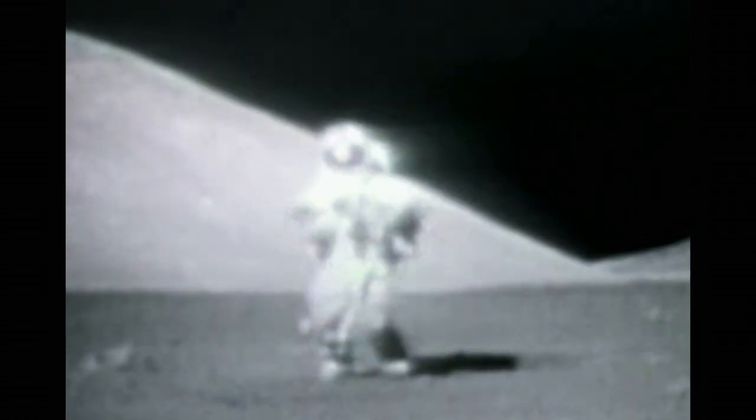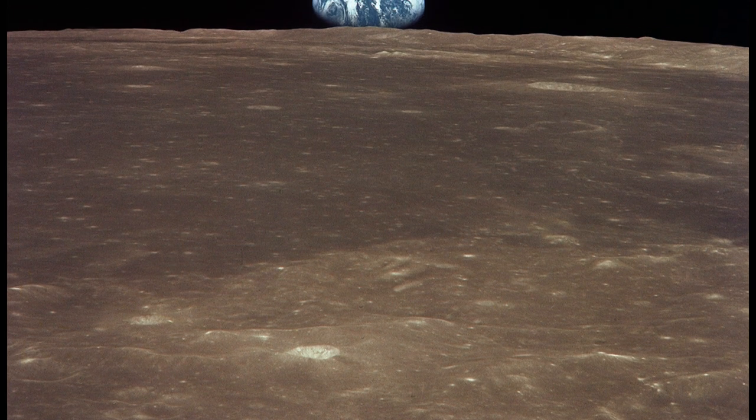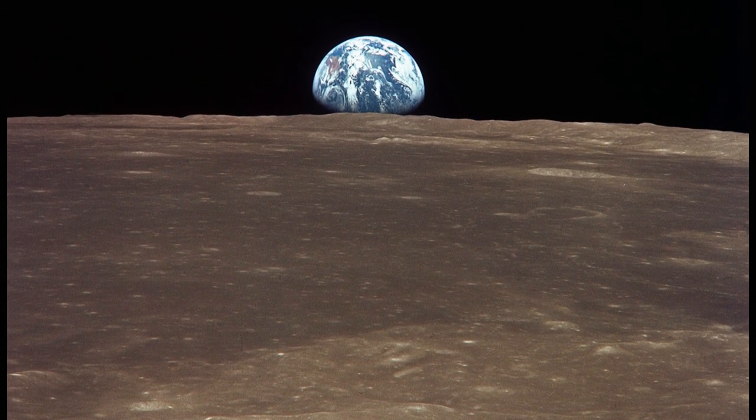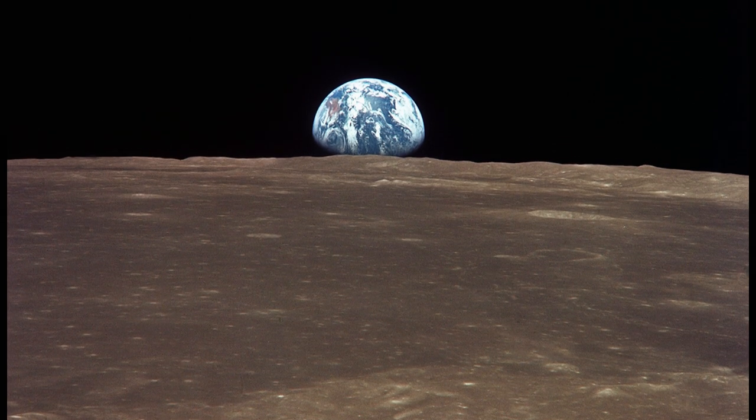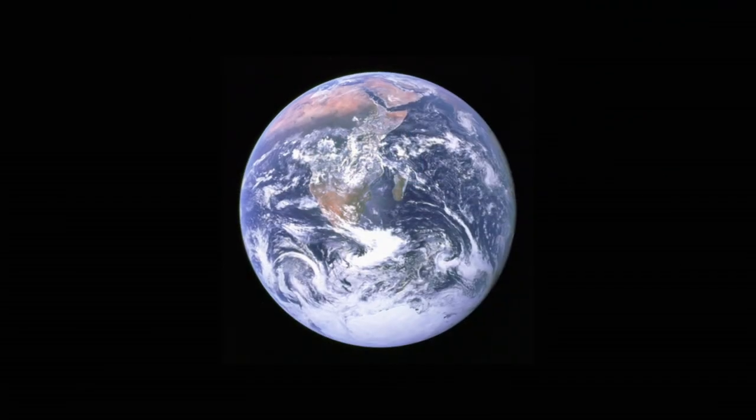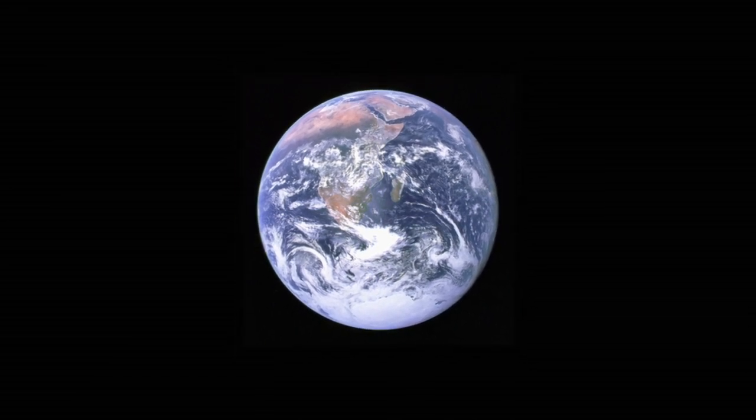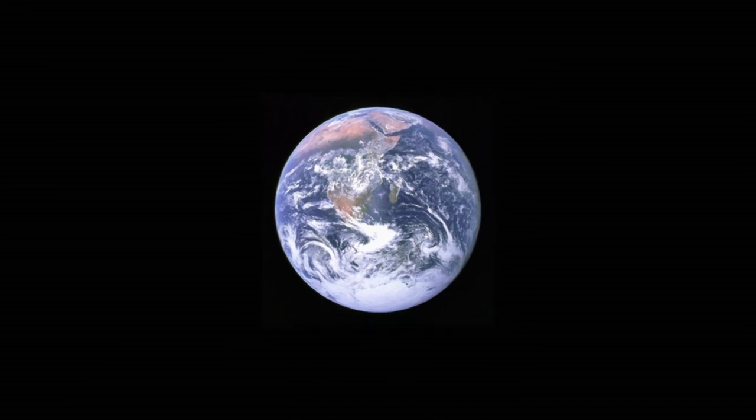But a funny thing happened on the way to the moon. From 380,000 kilometers away, we saw our planet and ourselves for the very first time. The most interesting thing about the moon missions was when they looked in the rearview mirror and they saw the planet Earth for the first time against the emptiness of all space. It was like we suddenly realized that actually the Earth was a very special system. In a sense, it was kind of alive.